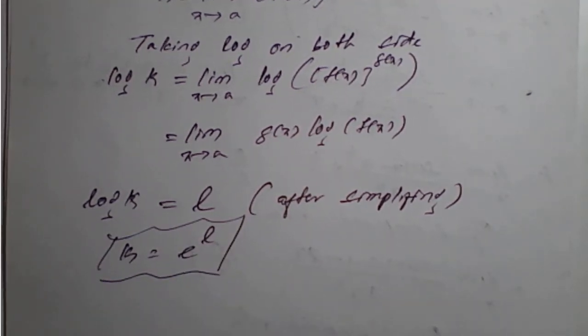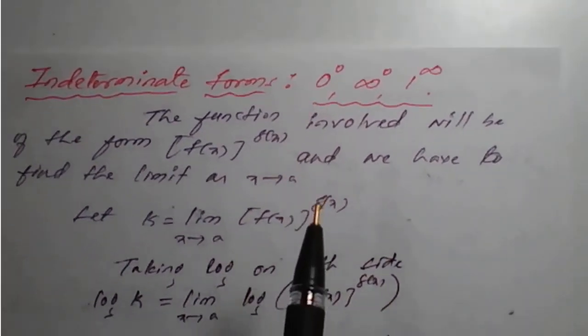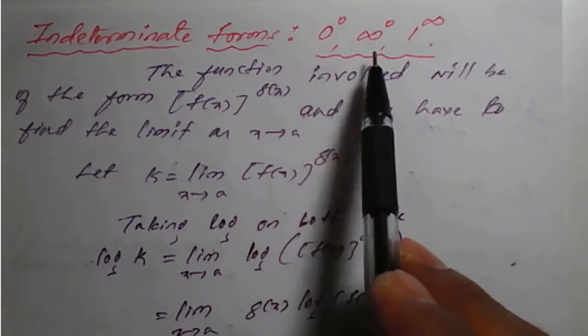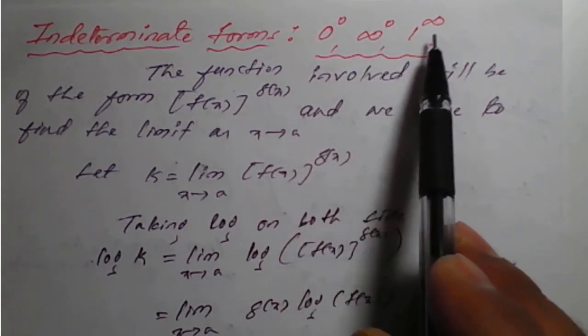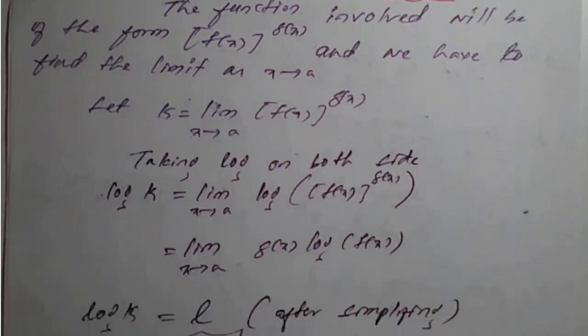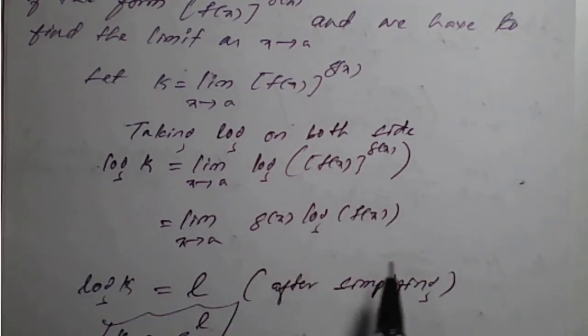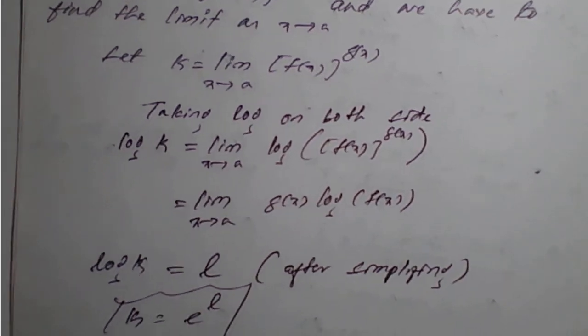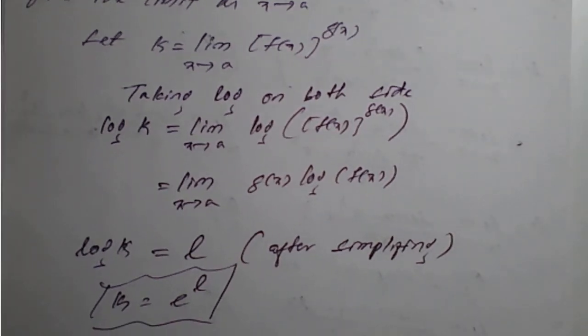So like that, we need to simplify. If we get any of the indeterminate forms - 0 by 0, infinity raise to 0, or 1 raise to infinity - we need to take log on both sides and apply logarithmic property. When the situation of indeterminate form, 0 by 0 or infinity by infinity comes, then we need to go for L'Hôpital's rule and simplify. Let us see a problem based on this, so that it will be more clear. Thank you.